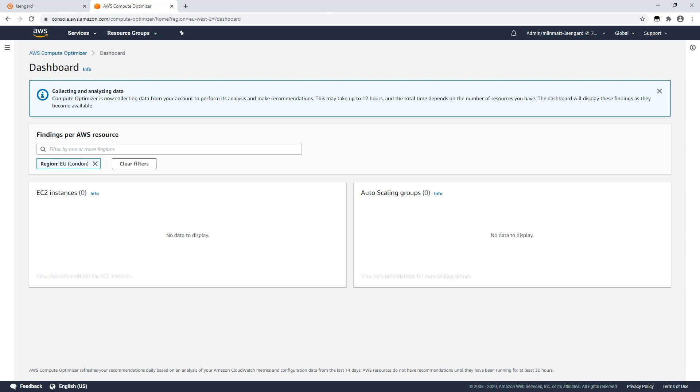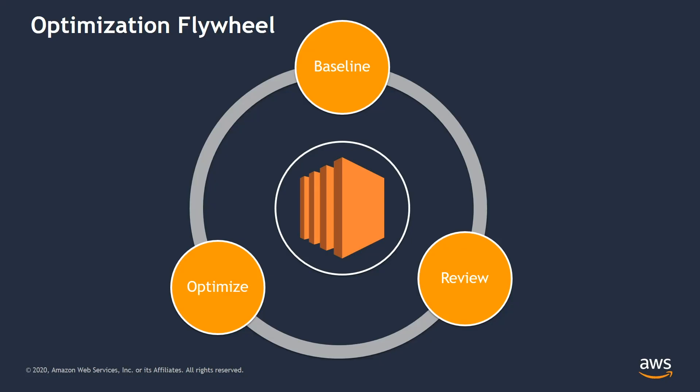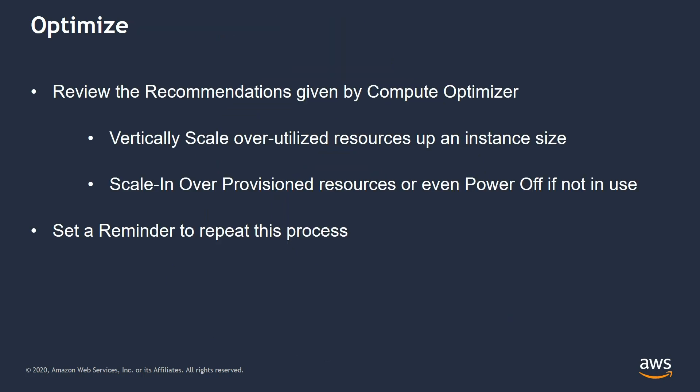You can then access these recommendations from the same place in Compute Optimizer. So we've now reached the last step in our process — the Optimize step. We've gotten our baseline and had Compute Optimizer make sense of the findings, so now we need to take action. After reviewing our recommendations, if an instance is under-provisioned, we can take action to scale up that instance to another size or family. If it is over-provisioned, we can choose to scale in to a smaller size instance, or make a call whether that instance needs to run at all. The last step in this continual process is to put a calendar reminder in to re-review the findings on a per month or per quarter basis to keep this optimal.